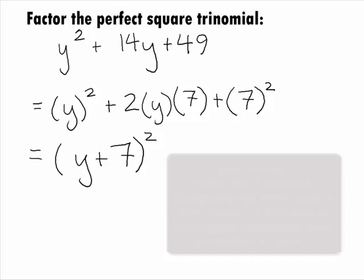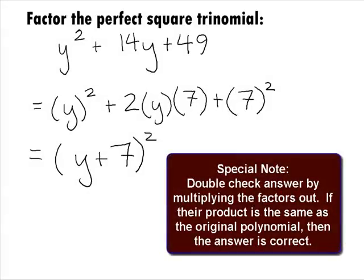We can always double check ourselves on factoring problems by multiplying out the factors that we have. If they multiply to be the original polynomial, then we have the right factors. If they don't, we need to go back and try factoring the problem again.